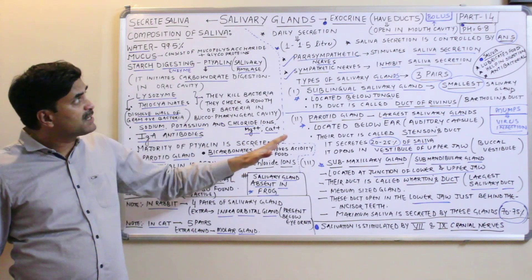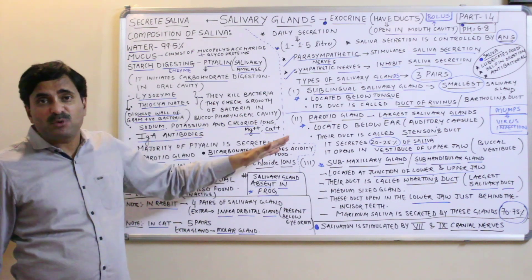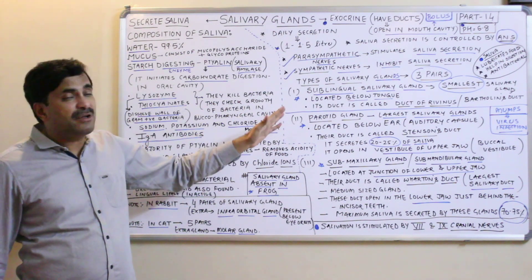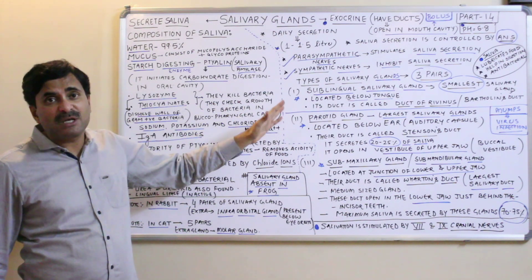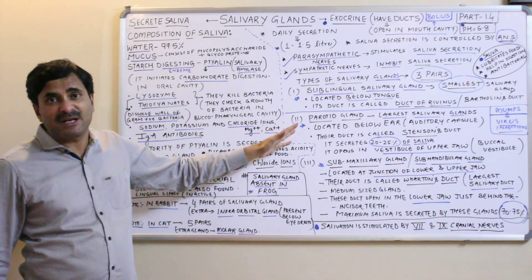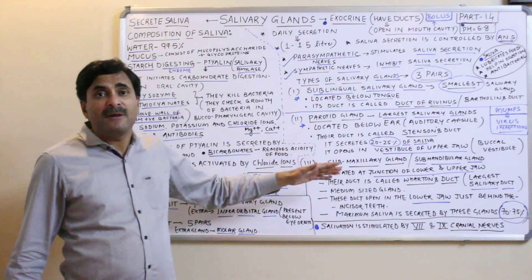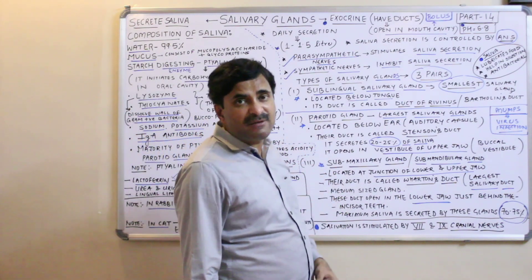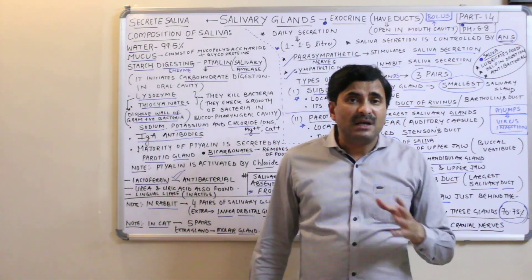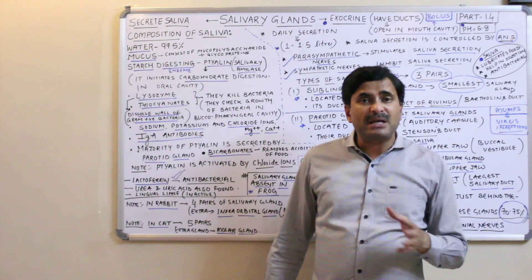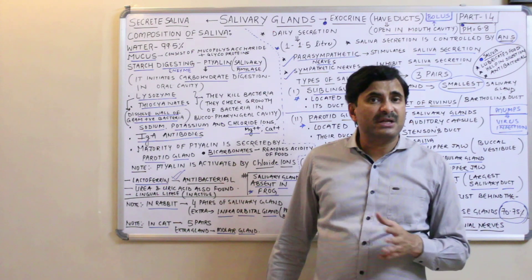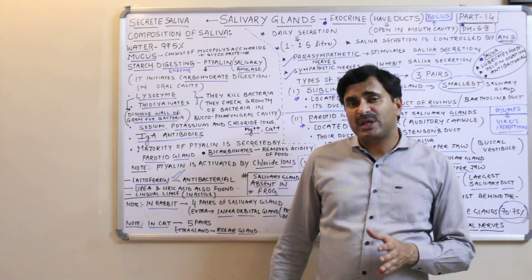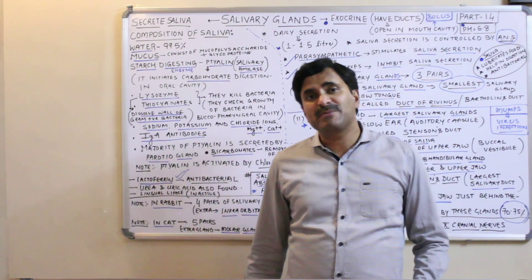So in today's video, we have discussed the composition of the saliva and the different types of the three pairs of salivary glands. In upcoming videos, we will deal with the liver, the pancreas, and the intestine glands. Thanks a lot for watching.